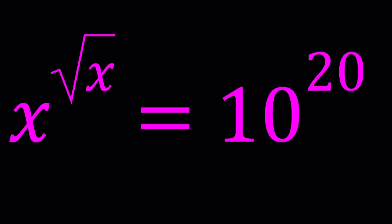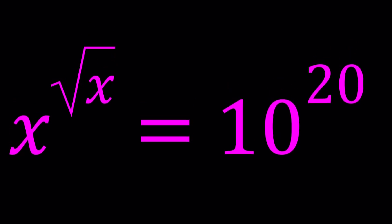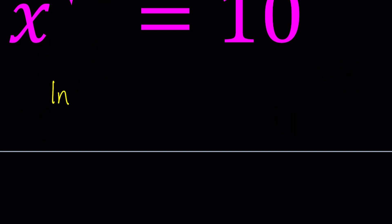Whenever you get an equation like this, you want to bring down the variable exponent. Obviously you don't want to leave it there. So let's go ahead and natural log both sides. Natural log is ln, which is base e, x to the power root x, ln 10 to the power 20.